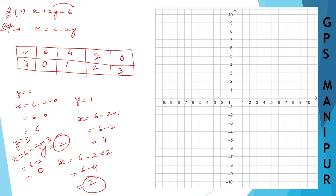Now let me draw this on the graph. This is the x-axis and this is the y-axis. When x is 6 and y is 0, it's here. So we have the point (6, 0).